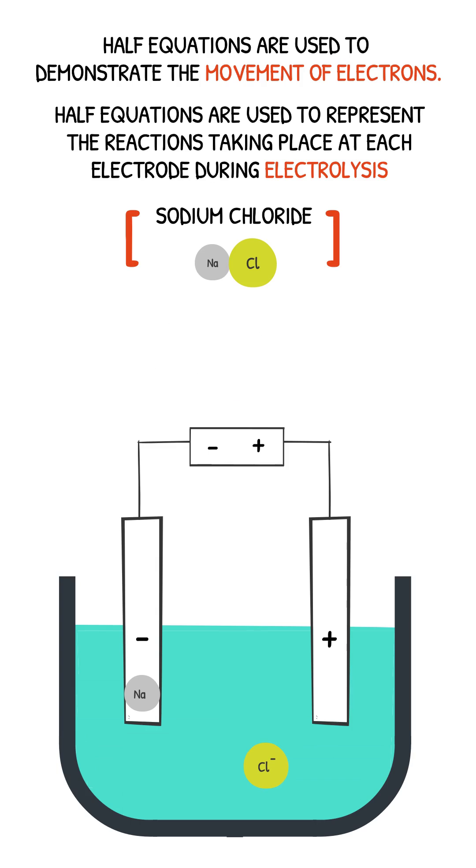In contrast, the Cl- ions are attracted to the anode, where they lose one electron and return to neutral chlorine molecules. We can write the half equation for this reaction like this.